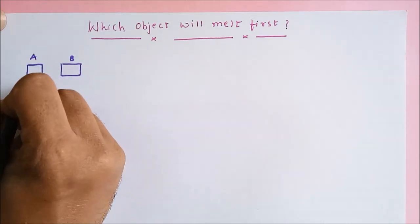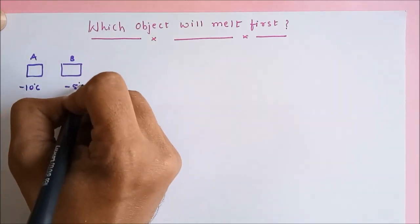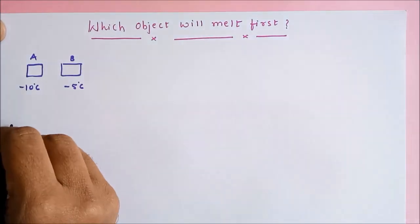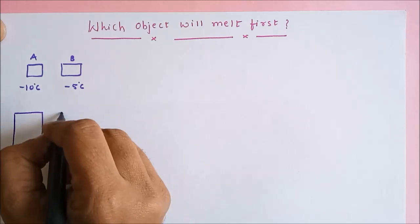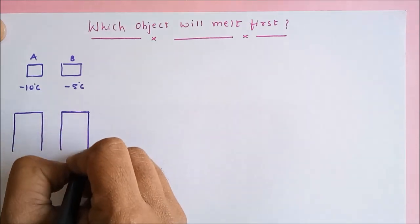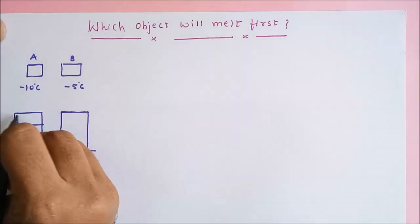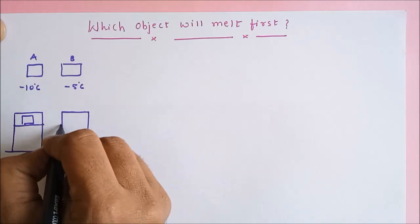Melting point of A is minus 10 degree Celsius, melting point of B is minus 5 degree Celsius. Now suppose they are inside different refrigerators. This is a deep freezer compartment and I am placing A inside it.